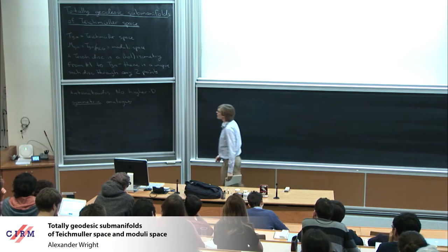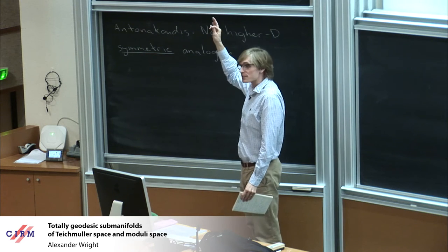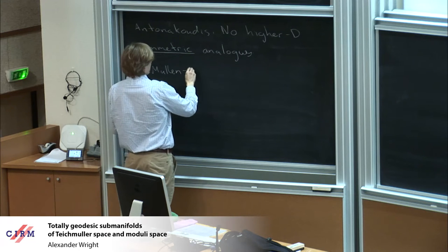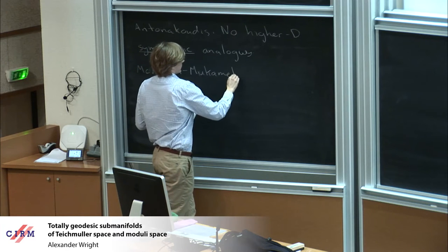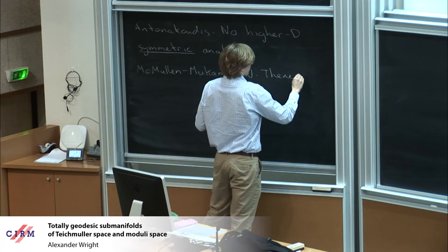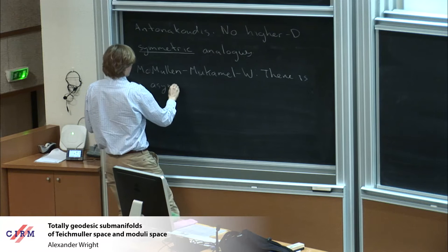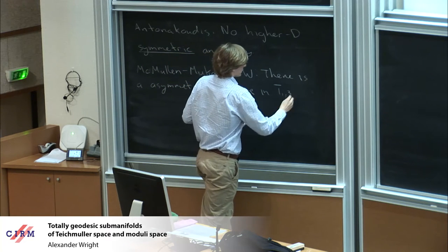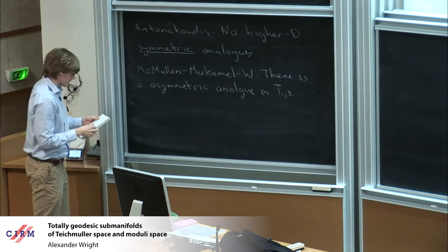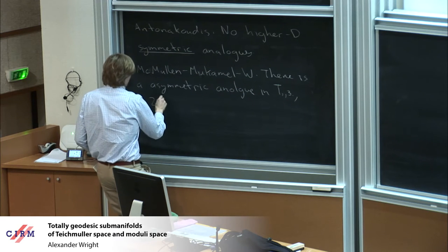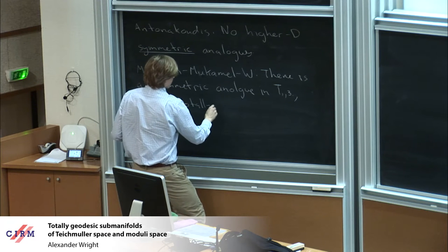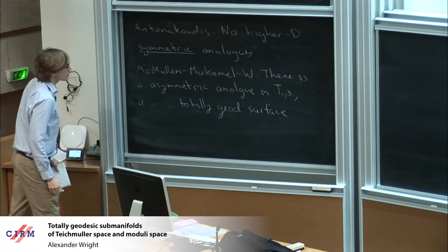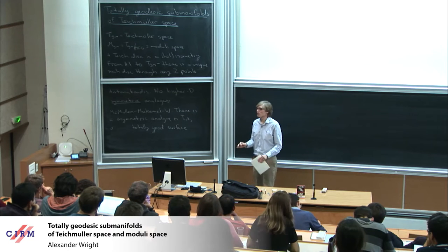At this point you might wonder: maybe there's just no natural higher dimensional subspaces of Teichmüller space that are easier to understand. That is a result in that direction. But recently we found something which isn't symmetric but is a higher dimensional analog of a Teichmüller disk — that was joint work with Kurt McMullen and Ronan Mukamel. We found an asymmetric analog in T_{1,3}, the Teichmüller space of genus one Riemann surfaces with three marked points. What we found is a two-dimensional (complex dimension two) totally geodesic surface.